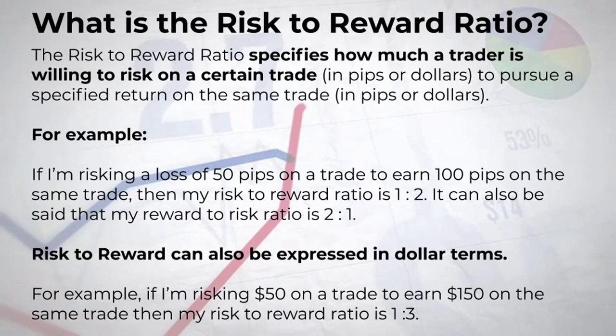Let's cover specifically what a risk-to-reward ratio is. As currency traders, the ratio specifies how much a trader is willing to risk on a certain trade in pip or dollar terms to pursue a specified return on the same trade. For example, if I'm risking a loss of 50 pips to earn 100 pips on the same trade, my risk-to-reward ratio is 1:2, or said another way, my reward-to-risk ratio is 2:1.